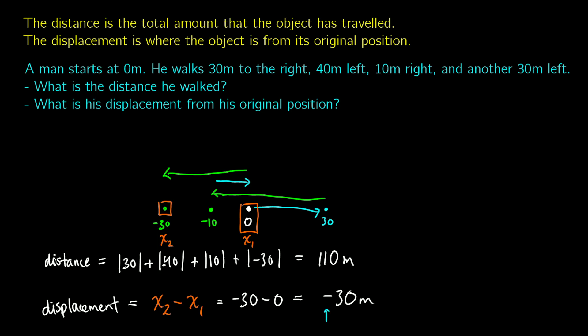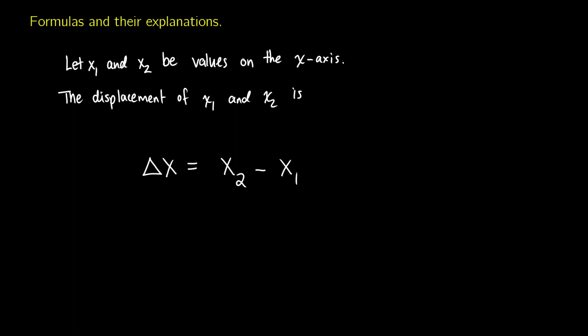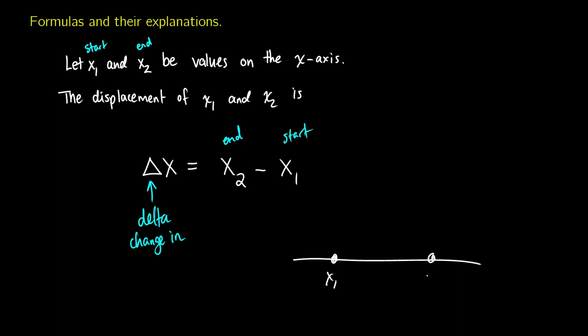With displacement, we also have to talk about a direction. So you could say negative 30 meters, or you could also say 30 meters to the left. The official formula for displacement: if you have two x values, x1 as the start point and x2 as the end point, the displacement delta x equals x2 minus x1. Delta always means a change in. We also get a direction — is the end point to the right or to the left?